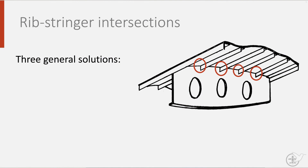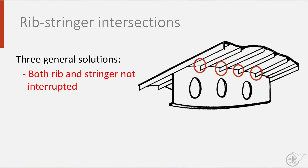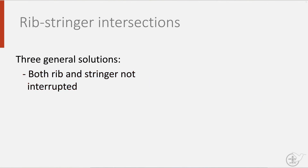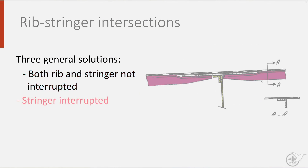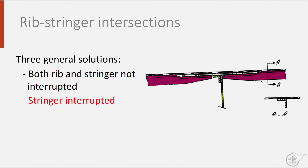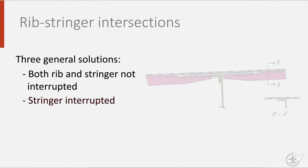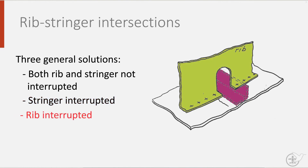One of three options are possible. First, interrupt neither, as shown here. Secondly, the stringer is interrupted. And finally, the rib can be interrupted. The selection of what is most appropriate depends on the loads locally and its manufacturability.